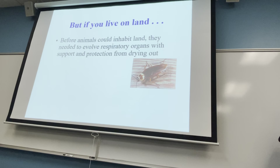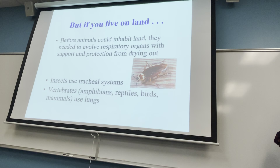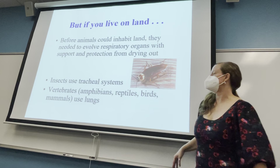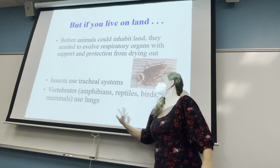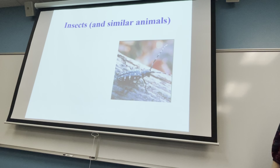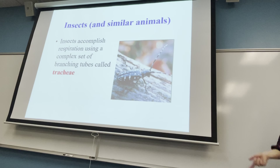Land organisms like cockroaches and other insects use what's called a tracheal system. Insects have branching tubes — the largest branches are called trachea — and they have more than one trachea, unlike us. We'll also look at amphibians, reptiles, birds, and mammals, using mammals as representative of those groups.